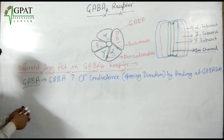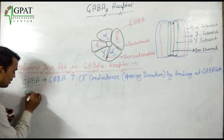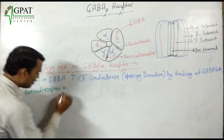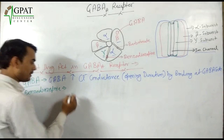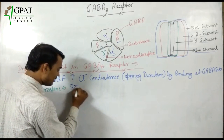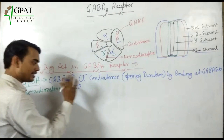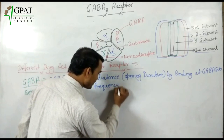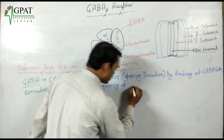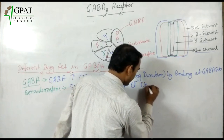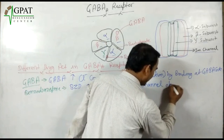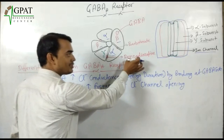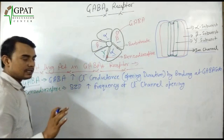The first drug is GABA, the second drug is benzodiazepine. Benzodiazepine increases the frequency of chloride ion channel opening. And where does it bind? It binds at the benzodiazepine binding site that is present at the alpha-gamma interface.